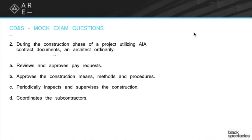You don't do pay request reviews on every single project, but on most projects it's one of your roles as the owner's agent — helping the owner understand whether what the contractor is claiming is reasonable. For example, if the contractor says they're 100% done with plumbing but none of the toilets are installed and none of the sinks work, you get to say no. That's one of your key roles during construction administration. All the other answer choices are essentially versions of means and methods, which is all the contractor.